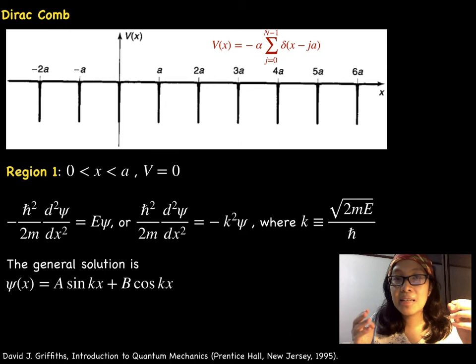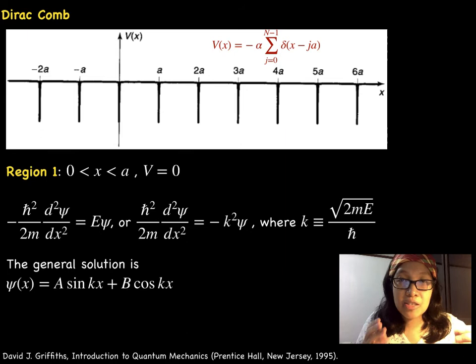We are merely interested in the periodicity. Still, the classic study by Kronig and Penney use a repeating rectangular pattern. Now back to the Dirac comb.